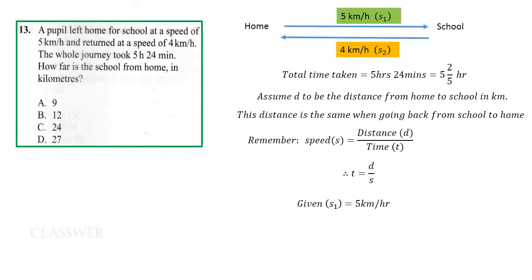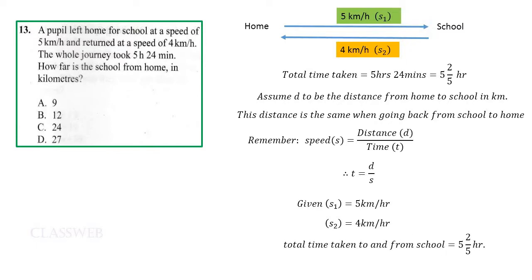We are given s1, speed 1, which is 5 kilometers per hour, and s2, speed 2, which is 4 kilometers per hour. The total time taken to and from school equals five and two-fifths of an hour.